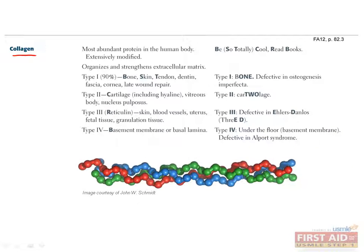Collagen is the most abundant protein in the body. Its structure is a triple helix, which is rich in glycine and proline. There are four main types of collagen. Type 1 is the most abundant and is found in bone, skin, tendon, dentin, fascia, and the cornea, and is also involved in wound repair.